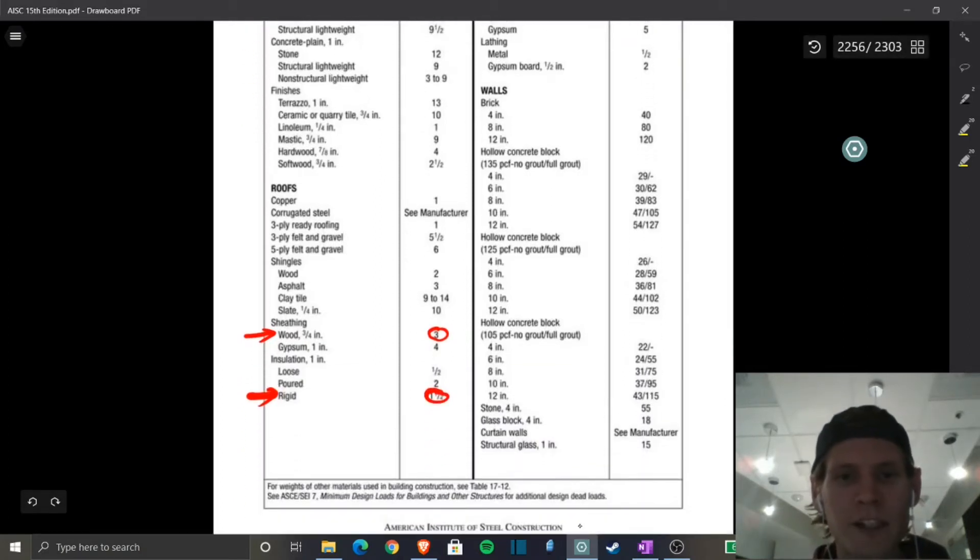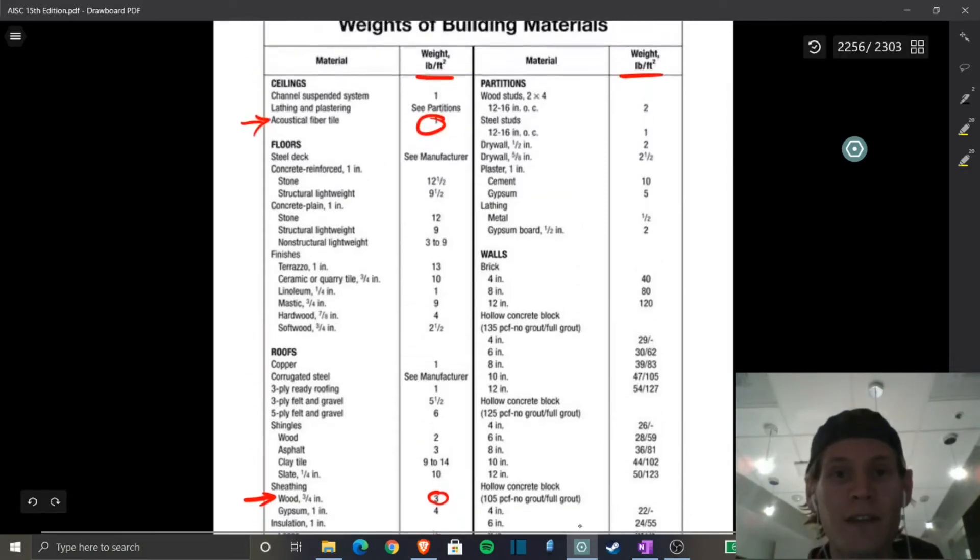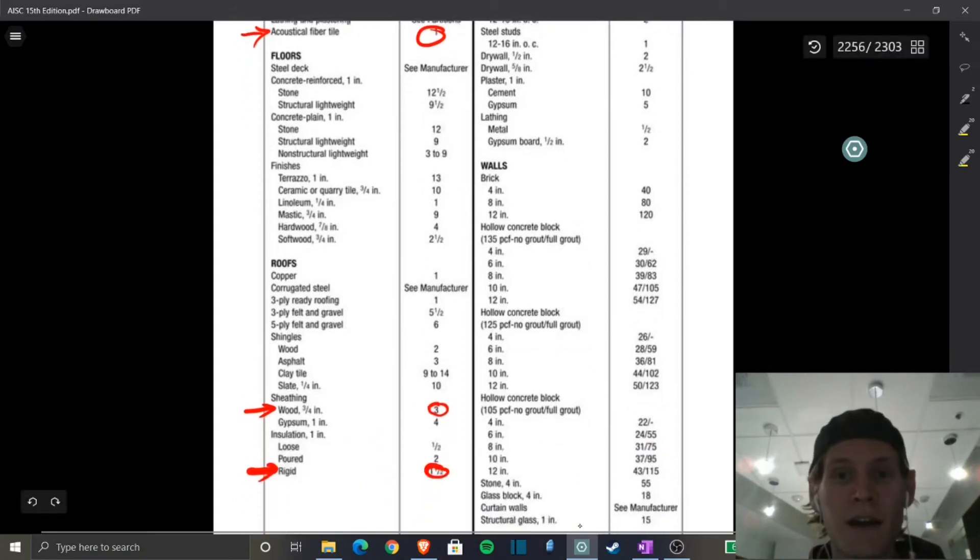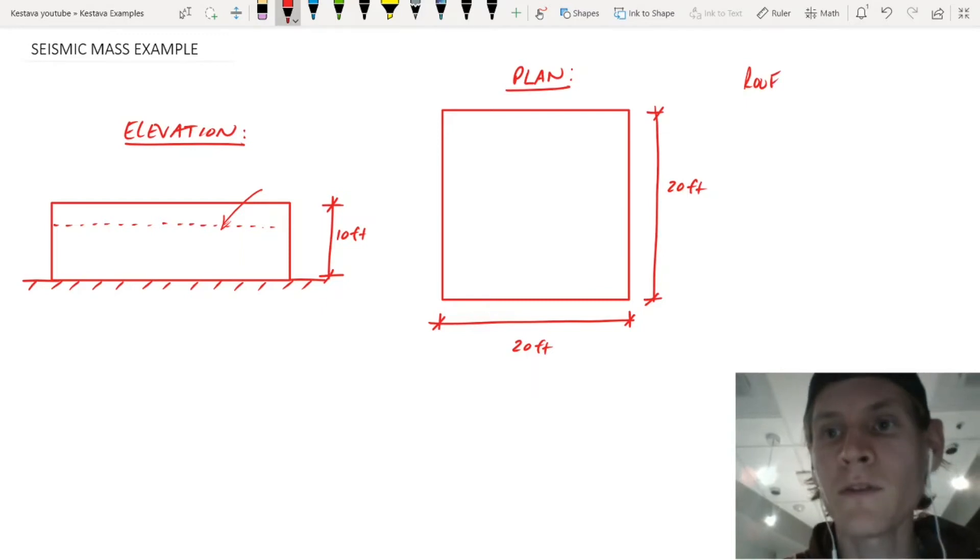So we have sheathing is three. The joists are five. That's eight. The rigid insulation is one and a half. Let's bump that up to two. So that gets us to 10 PSF. And then we have the acoustical ceiling, which is one PSF. So we're at 11 PSF. All right, so that is going to be our roofing. We have the roof equaling 11 PSF.